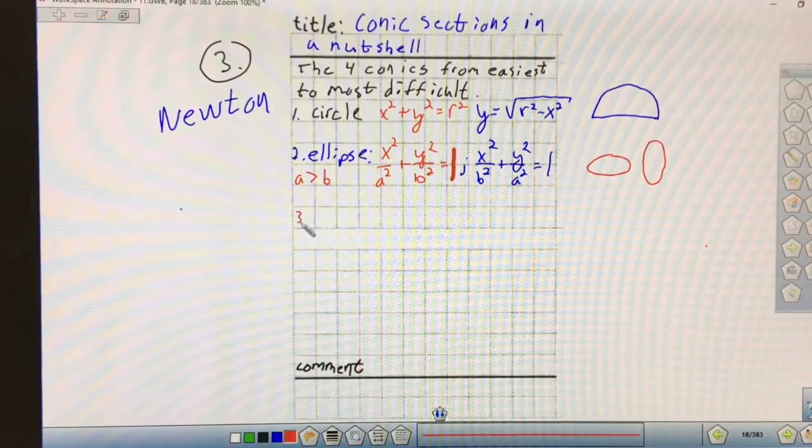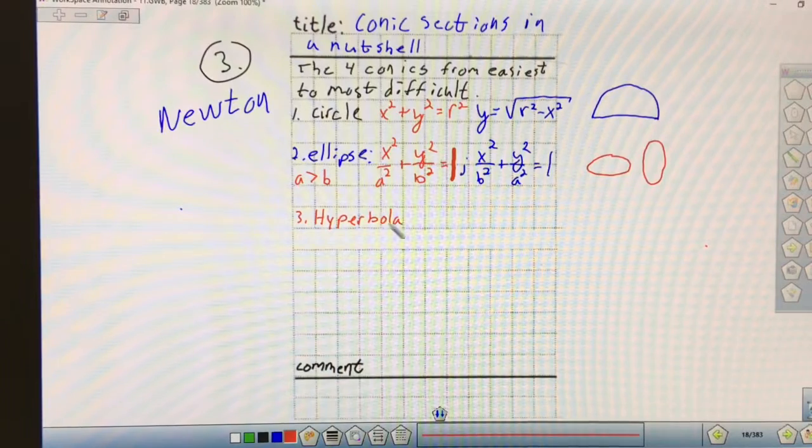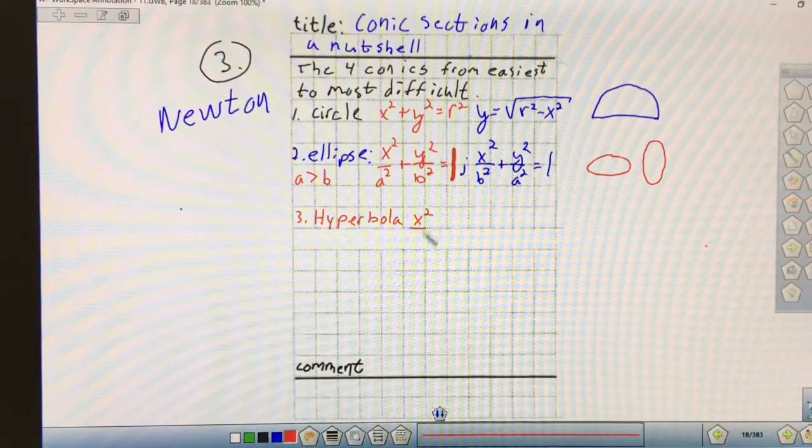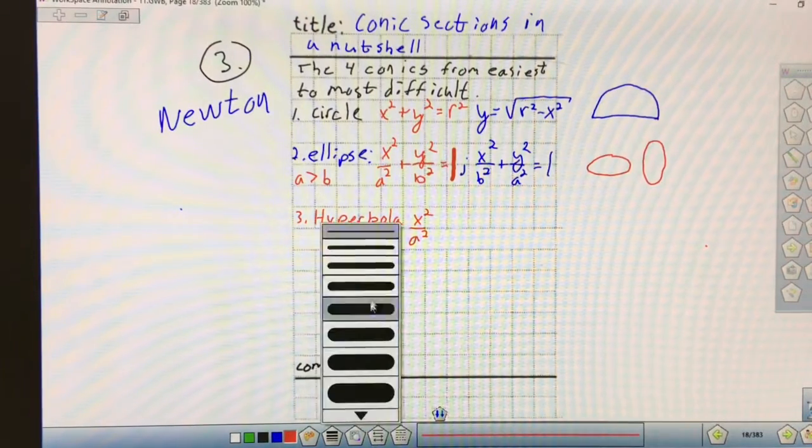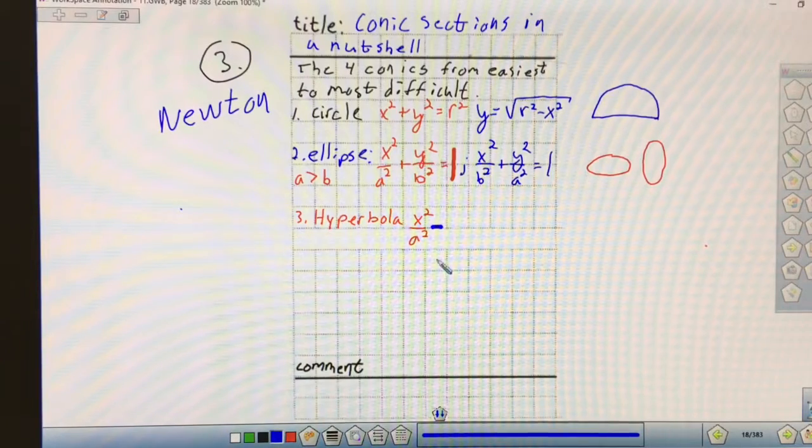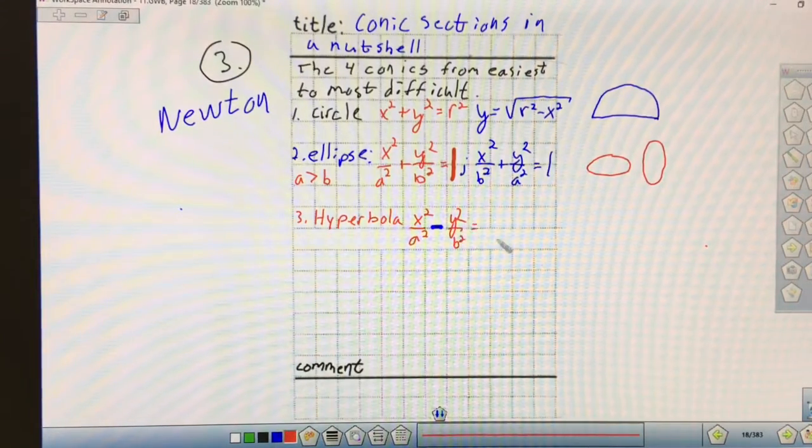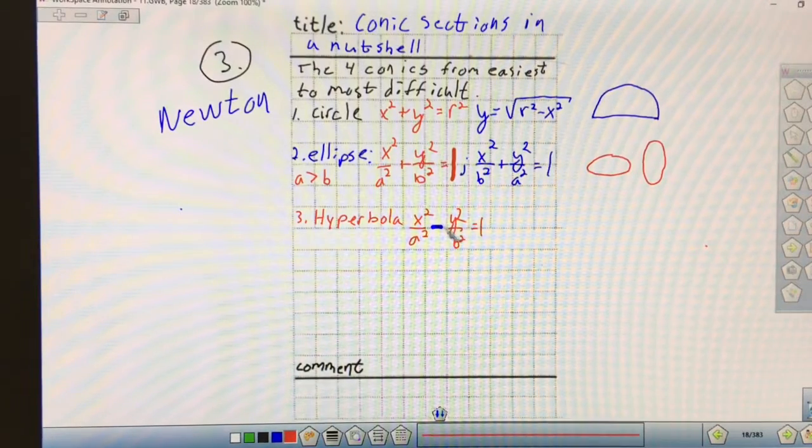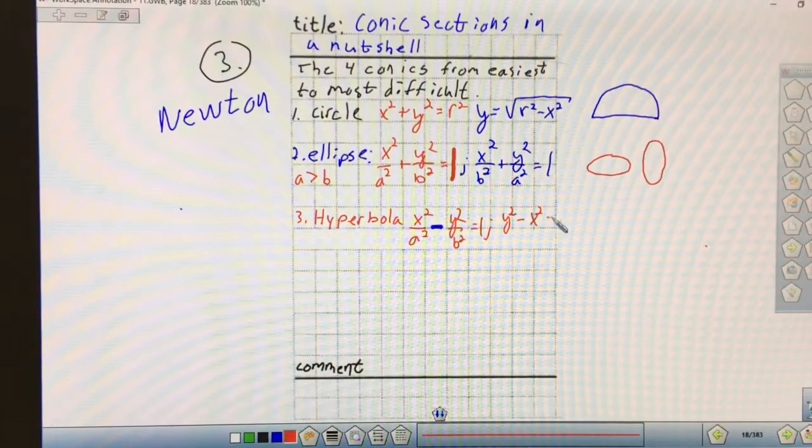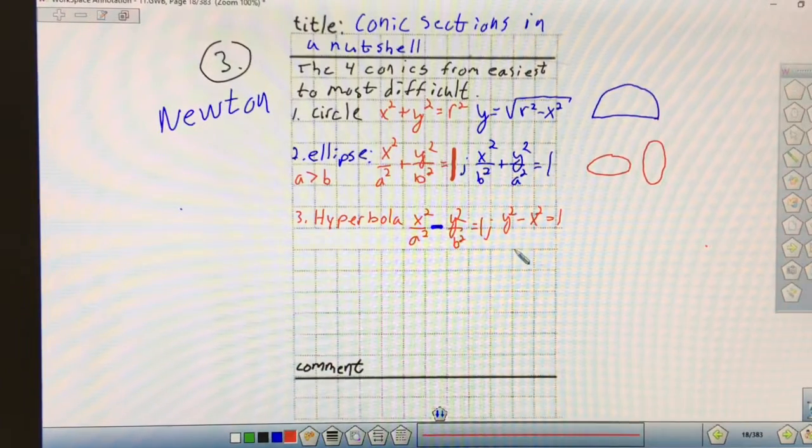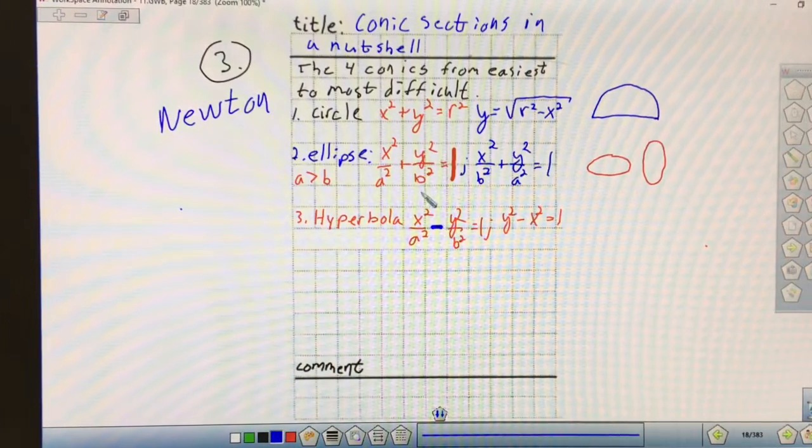The third one would be hyperbola. That equation is going to be X squared over A squared, and now instead of being plus, it's a minus, also set equal to one. The other version of this would be Y squared first. When Y squared comes first, it changes the orientation of the graph. When X squared comes first, the graph is going to be orientated like this. When Y squared comes first, the graph is going to be orientated up and down.